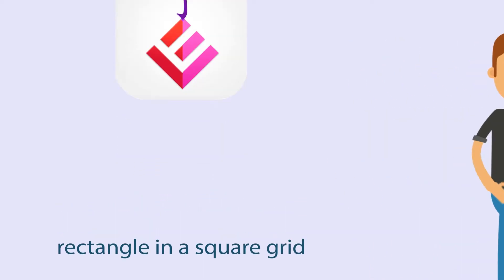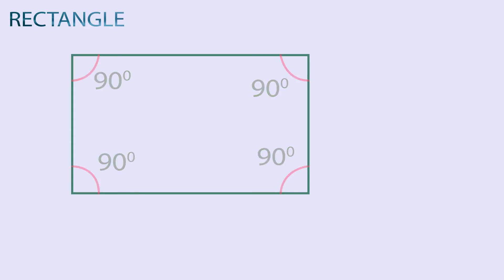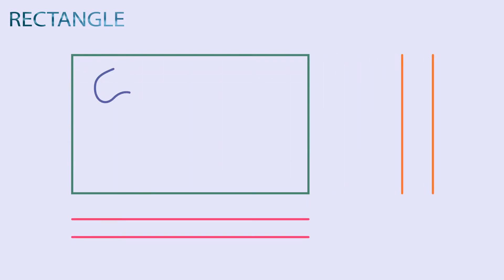We know that in a rectangle, every angle is 90 degrees, and opposite sides are equal and parallel. The long side of a rectangle is called the length and the short side is called the width.